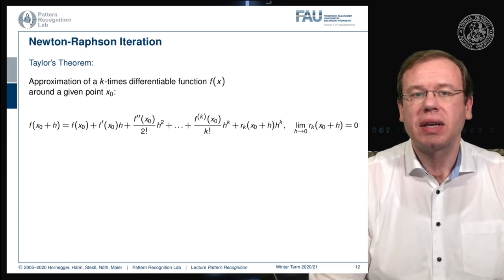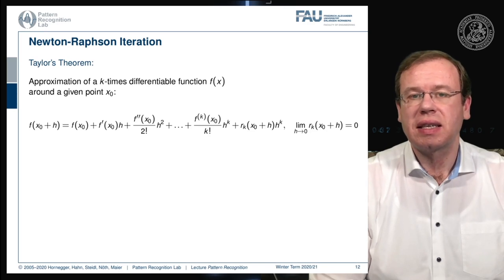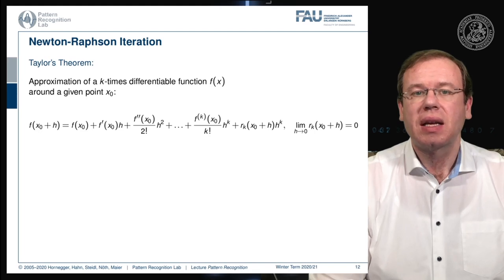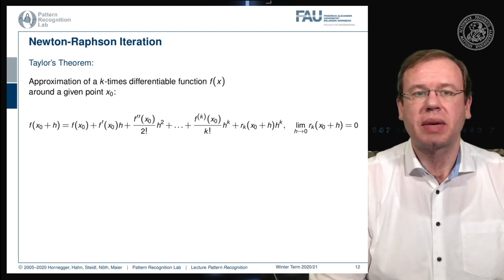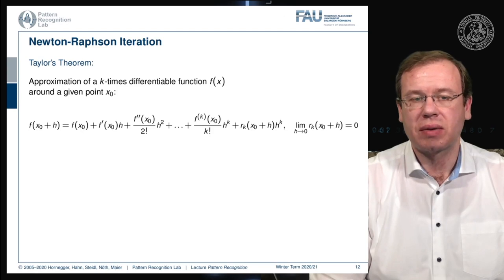If we compute the limit of h going to 0, this is going to be exactly 0, so the error term that remains will also go towards 0. The closer we go to the initial position, the closer our approximation will be. We can now use this in order to find an optimization strategy.